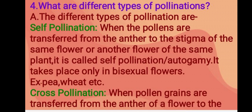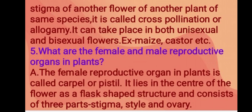Examples of self-pollination: pea, wheat, etc. Cross-pollination: when pollen grains are transferred from the anther of a flower to the stigma of another flower of another plant of the same species, it is called cross-pollination or allogamy. It can take place in both unisexual and bisexual flowers. Examples: maize, castor, etc.